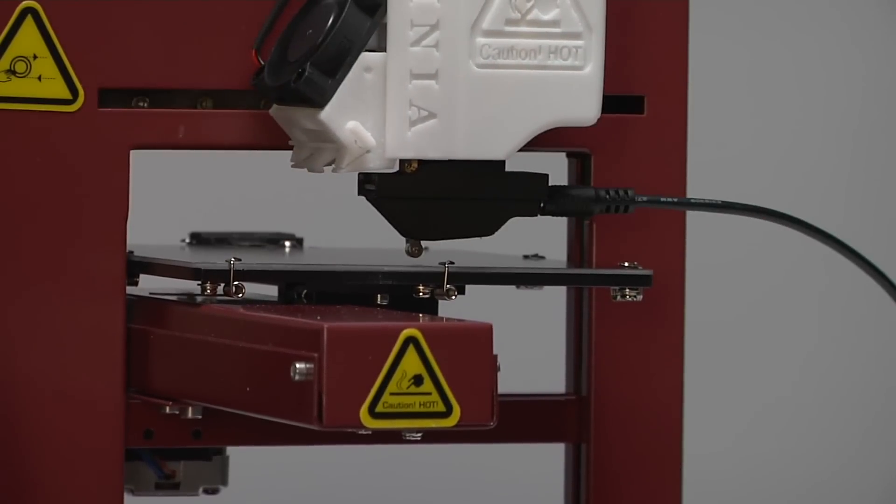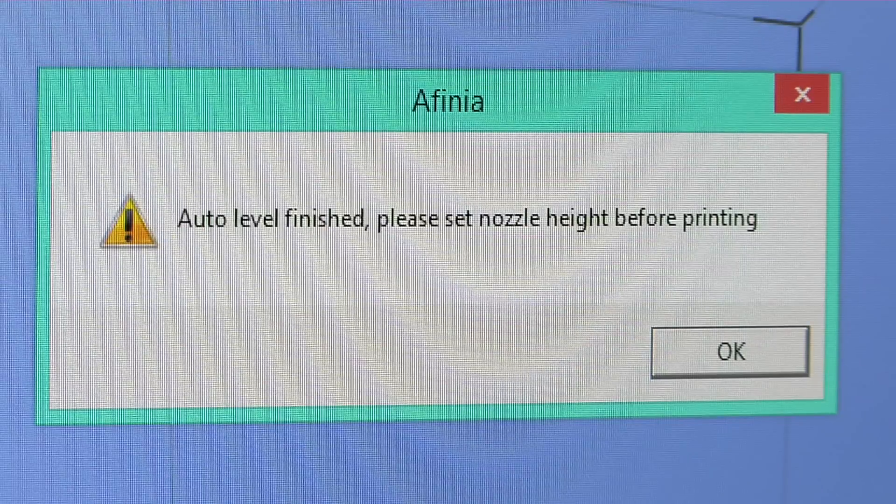When completed, the software will display Auto Level Finished. Please set nozzle height before printing. Click OK and proceed to the next step.